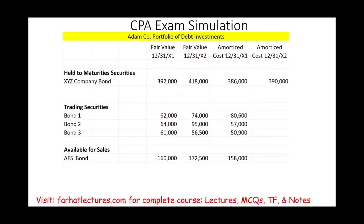Hello, and welcome to the session in which we will solve this CPA exam simulation that deals with debt investments. In this simulation, we have a portfolio of debt investments for Adam Company. Under debt investments, we could have three categories: held-to-maturity bonds, trading securities bonds, and available-for-sale bonds.